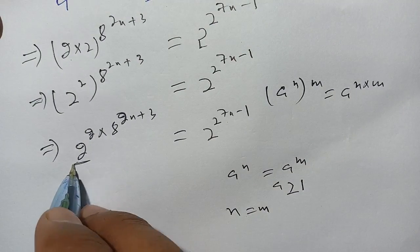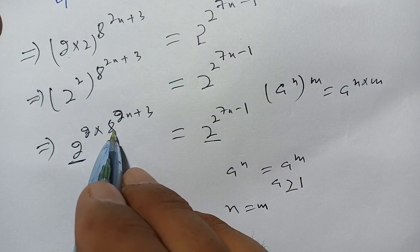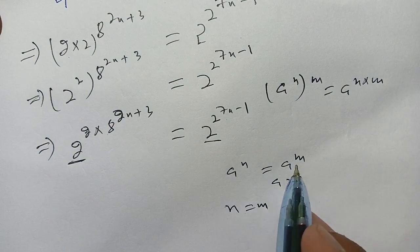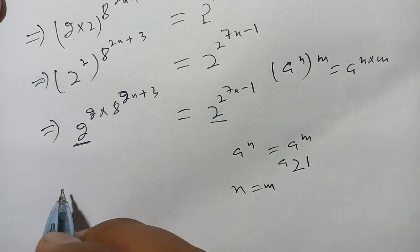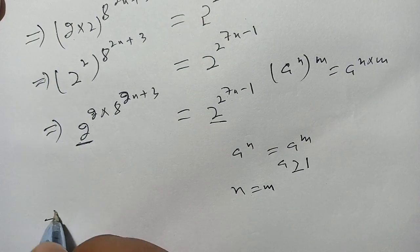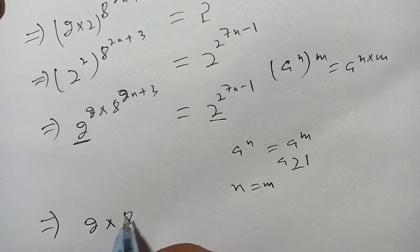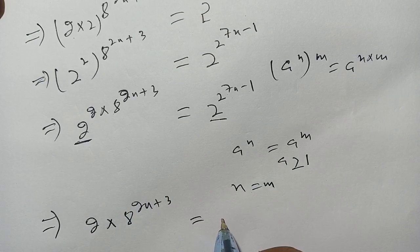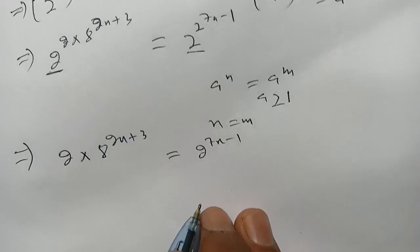Here a is 2, n is 2 × 8^(2x+3), and m is 7x-1. So we can compare the powers and write: 2 × 8^(2x+3) = 2^(7x-1).